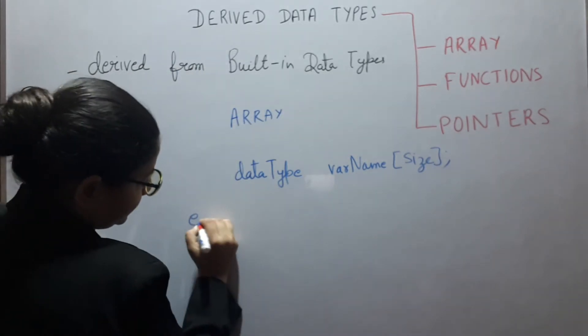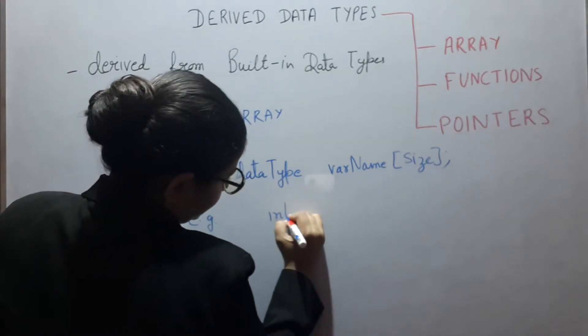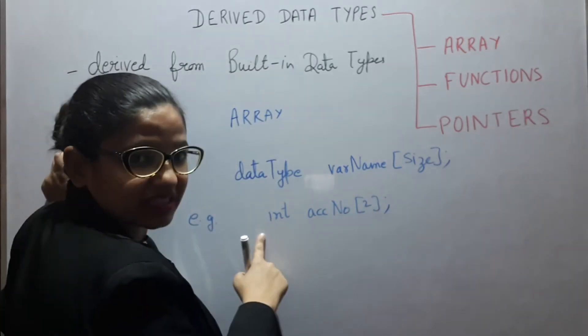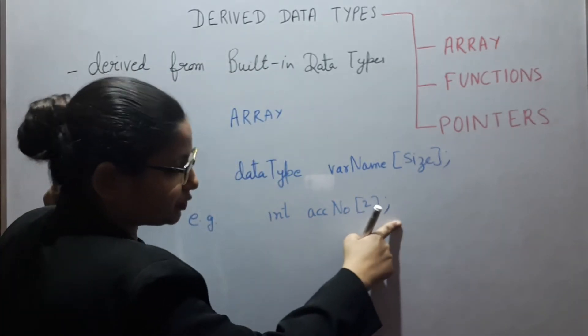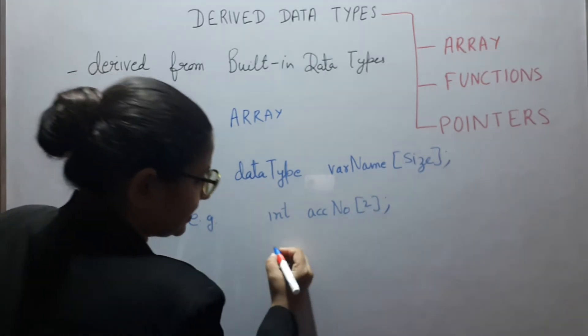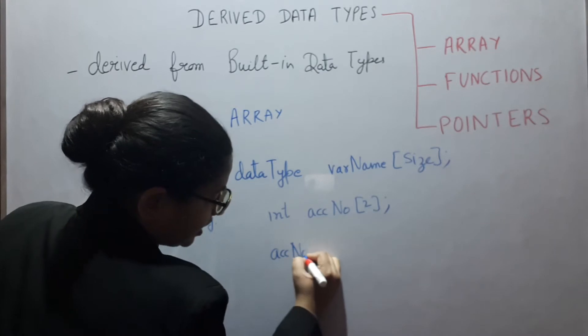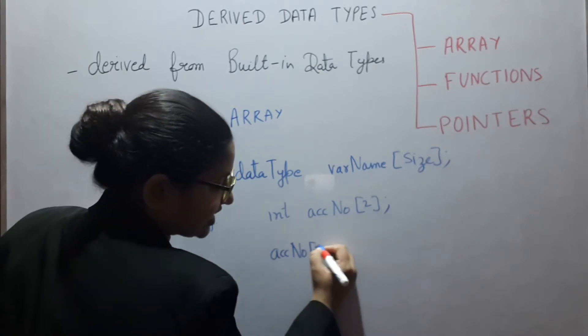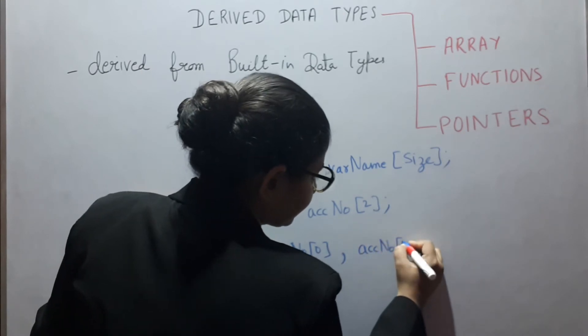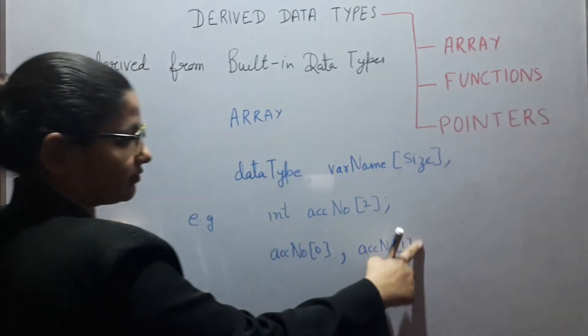For example, int account number[2]. If you are having this statement, it means we are declaring two variables. The first variable name is account number with index 0 and the second variable name is account number with index 1.